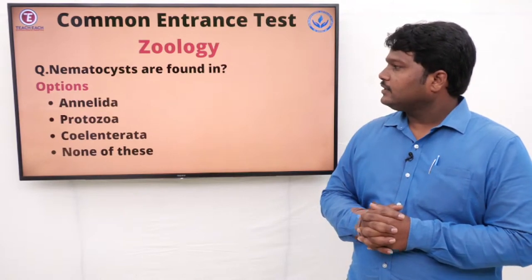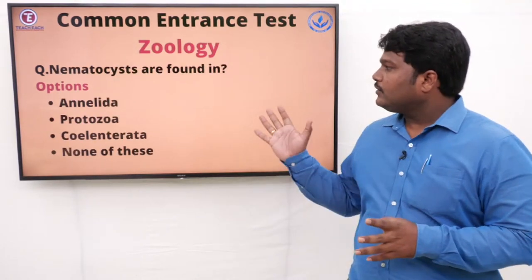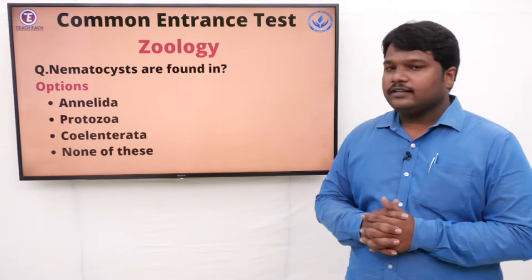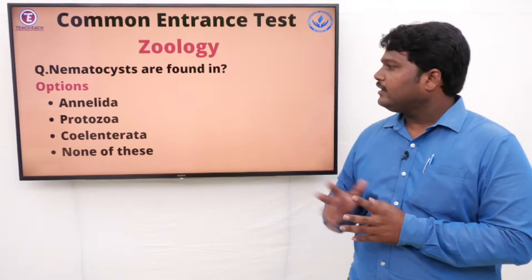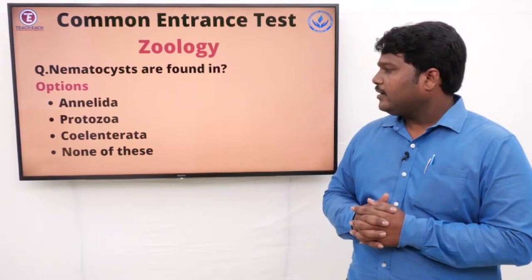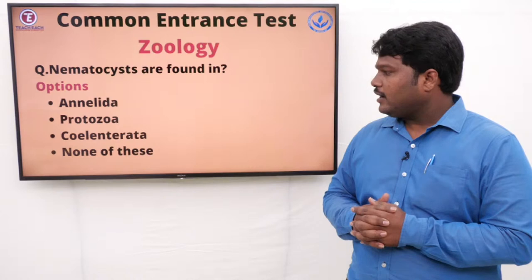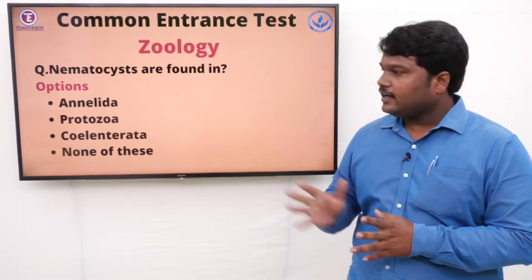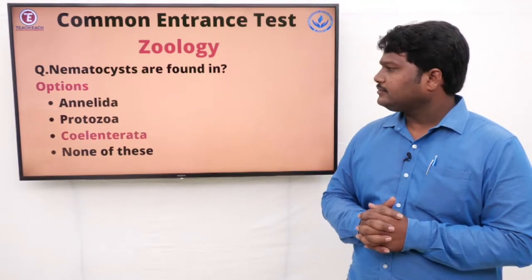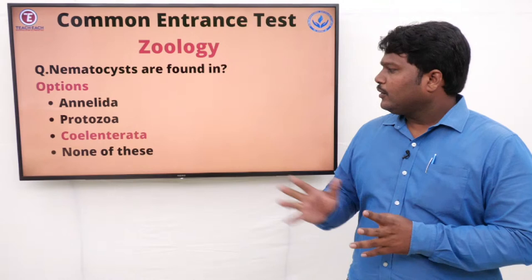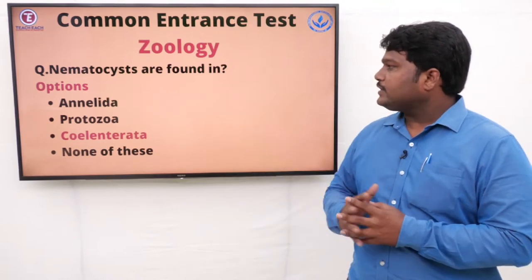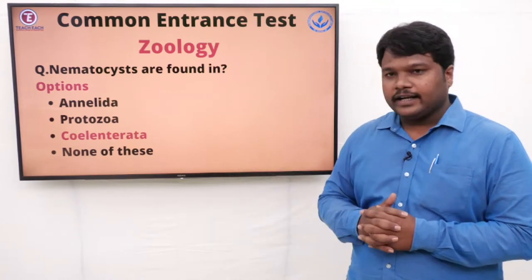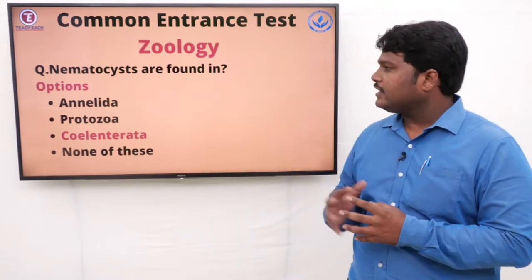Question 18: Nematocysts are found in. Options: A) Annelida, B) Protozoa, C) Coelenterata, D) None of these. The right answer is Coelenterata. Nematocysts are found in Coelenterata.